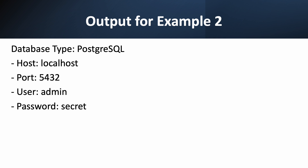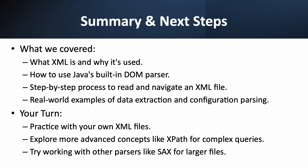Let's quickly recap what we've learned today. We started with the basics: what is an XML file and why is it so useful? We then dove into Java's built-in DOM parser and saw how it makes reading these files a breeze. We walked through the step-by-step process of parsing, navigating the tree, and extracting data. And we solidified our understanding with two practical real-world examples — one for a movie database and one for a configuration file. The best way to really learn this is to practice: grab a simple XML file, maybe a public data feed or an application's config file, and try to parse it yourself. When you're ready for more advanced tasks, explore XPath for more powerful search queries, or look into the SAX parser for handling very large files.